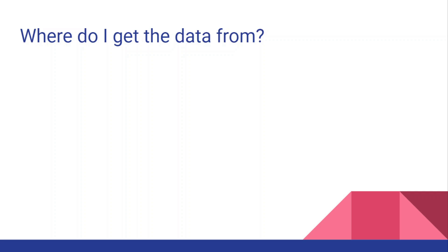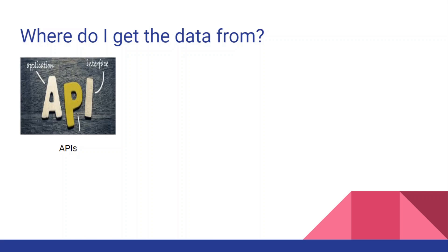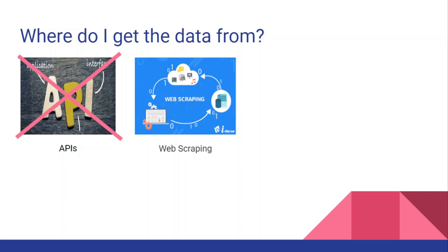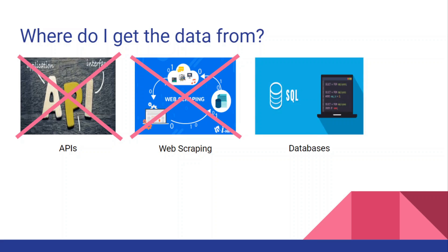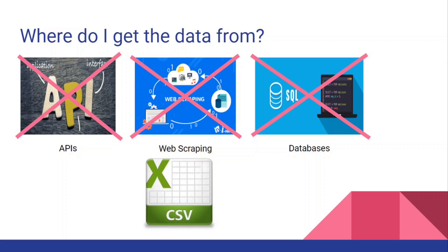Now a question you might have is: where do I get the data from? I have told you four processes, but if you don't know how to handle APIs that option might not help you. You can also do web scraping, and there is the database option. But a very suitable option for beginners is to download data from a public repository. The most famous one is Kaggle.